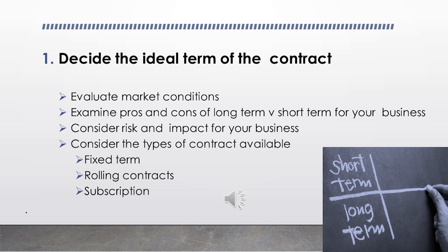Another type frequently used in retail is a subscription contract, which is for a fixed period but automatically renews for consecutive fixed periods unless terminated. For example, a one-year agreement will automatically renew for another year if there's no notification of termination or non-renewal by either party.